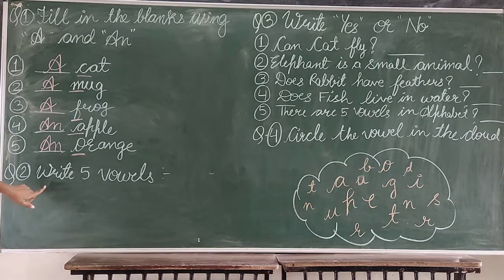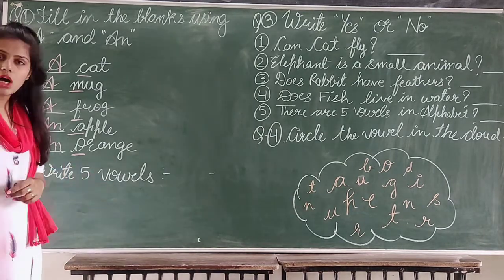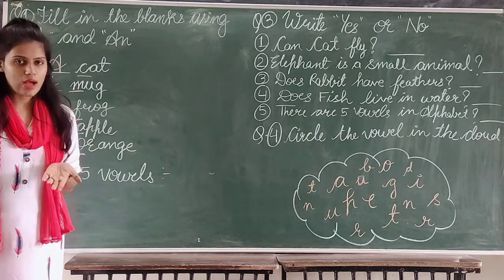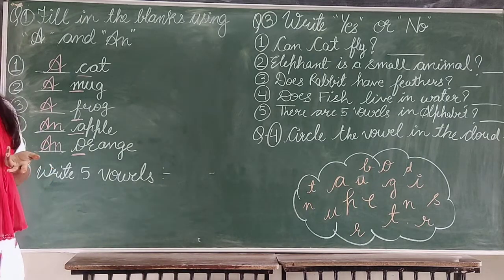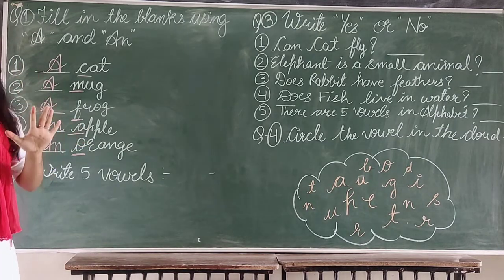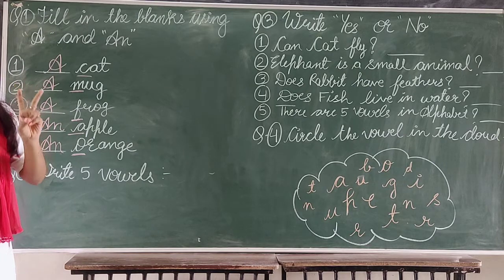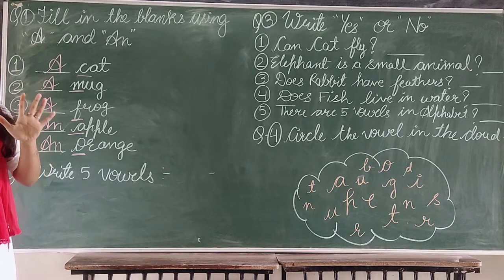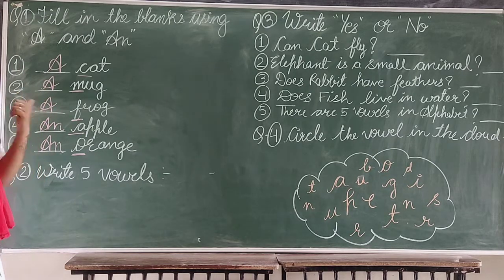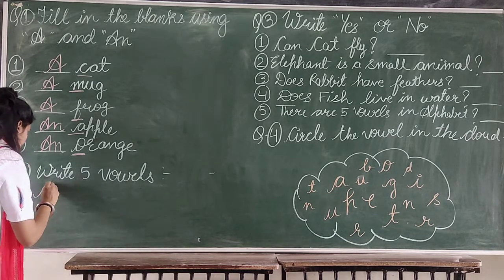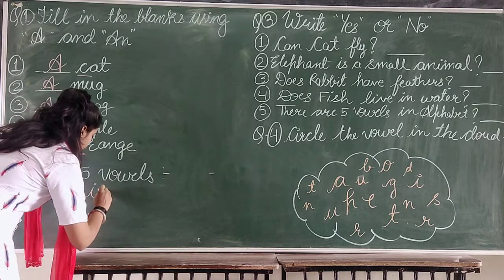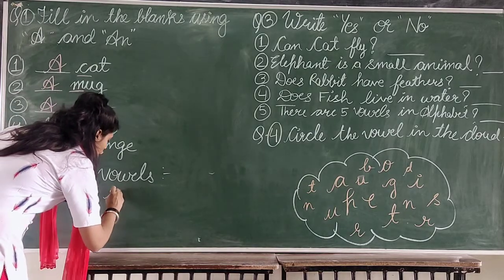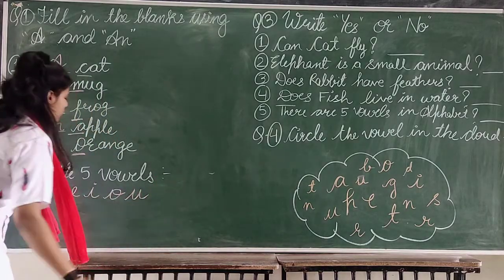Now question number two is: write five vowels. You have to write five vowels here. How many vowels are there? Five vowels — A, E, I, O, U. You have to write them here.